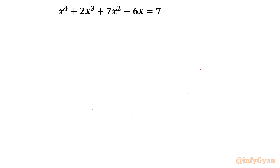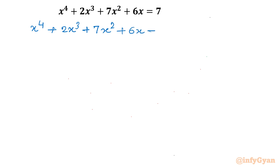Let us get started by moving all the terms to the left-hand side. So I will write x to the power 4 plus 2x cubed plus 7x squared plus 6x minus 7 equal to 0.